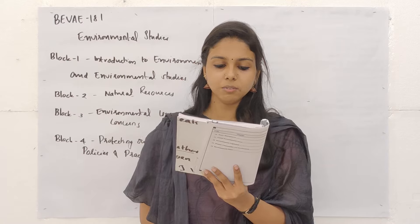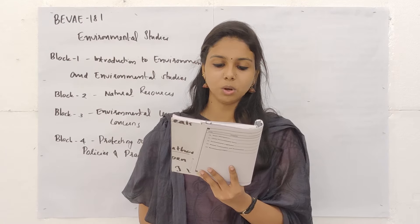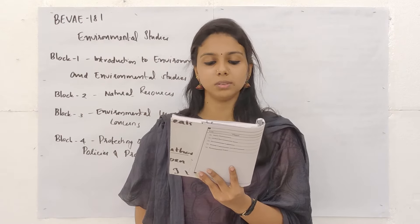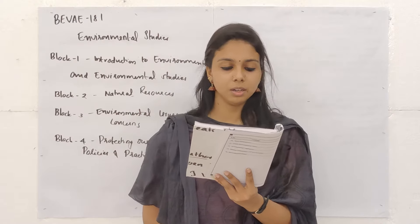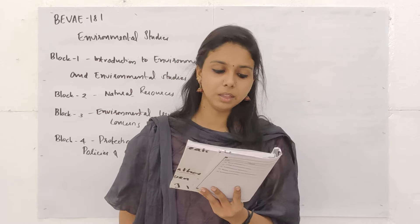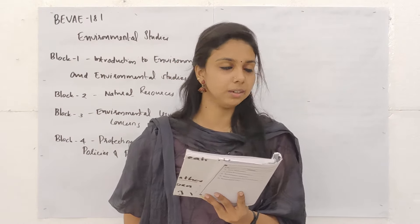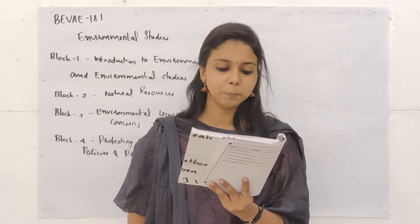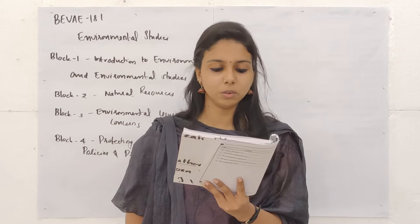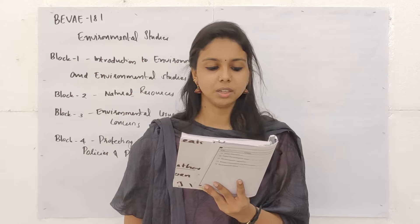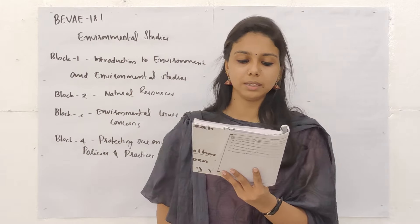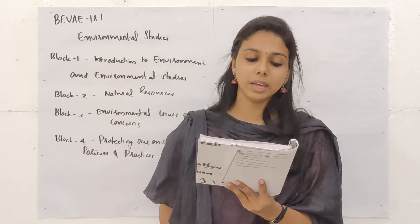Question 3: Which one of the following is not one of the 17 Sustainable Development Goals? Options: A. Life on land, B. Life on air, C. Life below water, D. Climate action. The answer is Option B — Life on air.